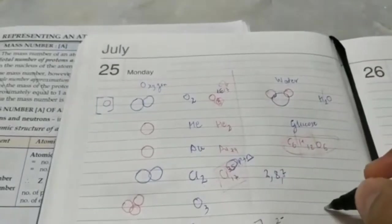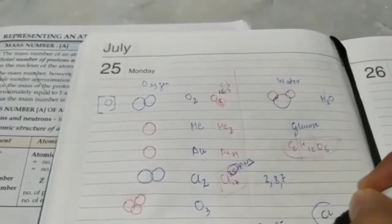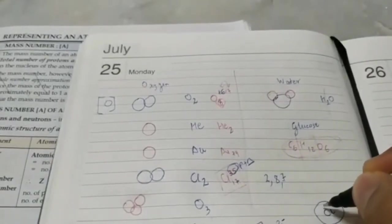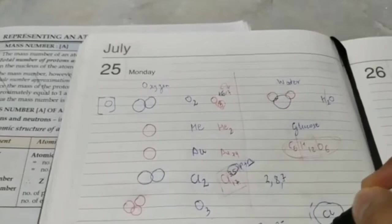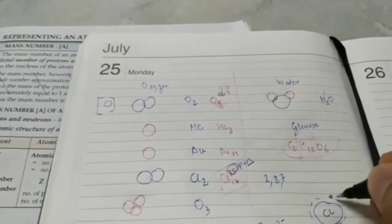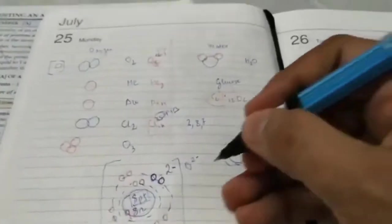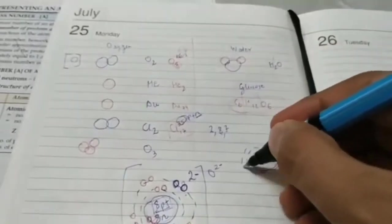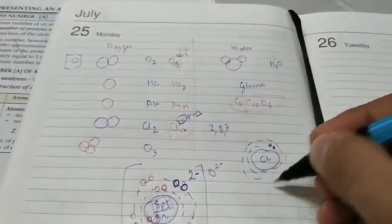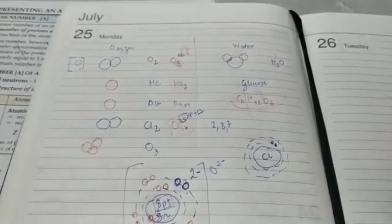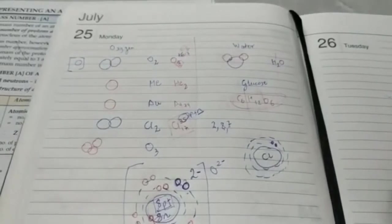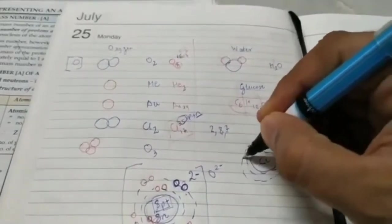I can even draw the diagram of chlorine atom now. Chlorine nucleus will have 17 protons and 18 neutrons. Then the first shell will have 2 electrons. You should draw all diagrams only with pencil and a compass or a pro circle. Freehand diagrams are not allowed. The second shell will have 8 electrons.